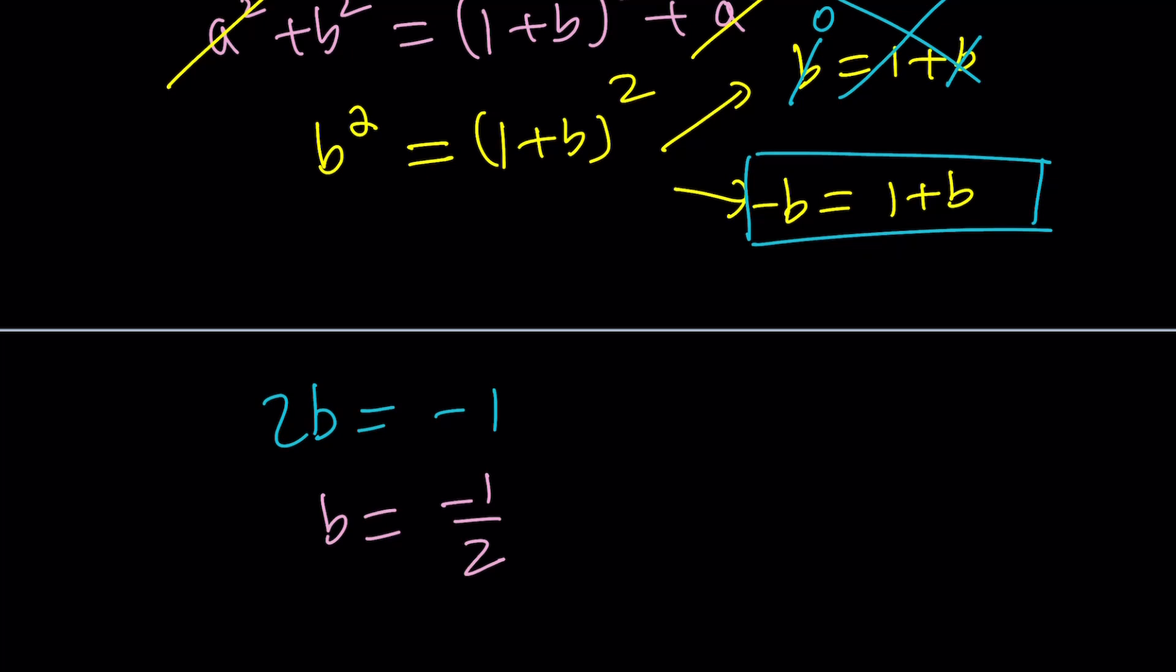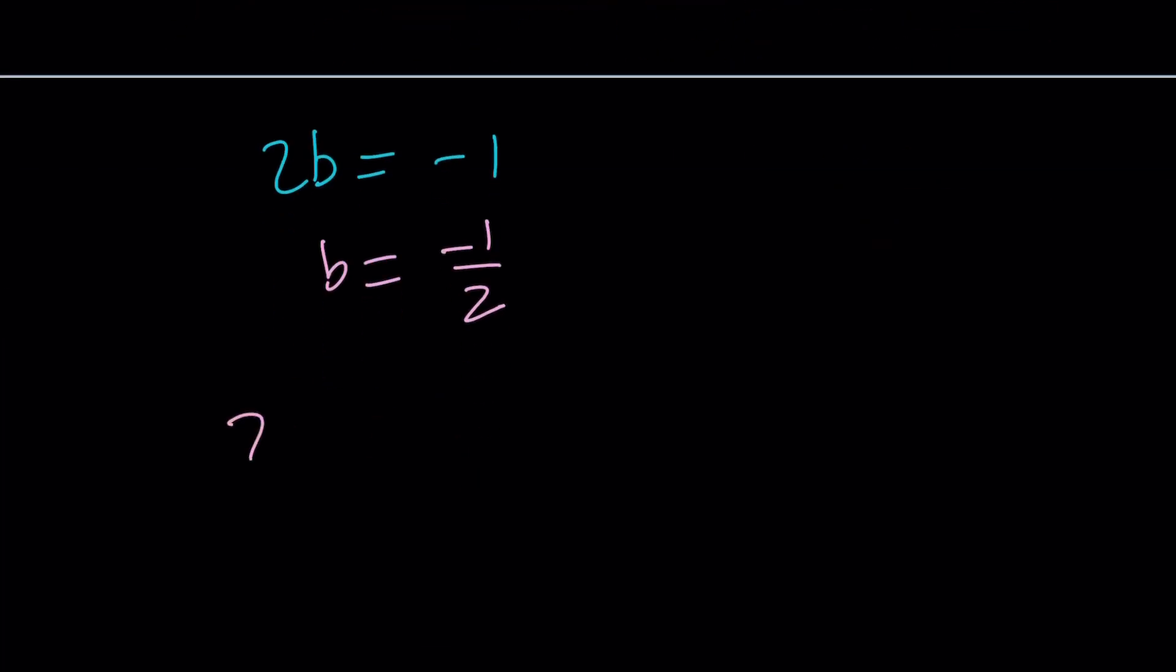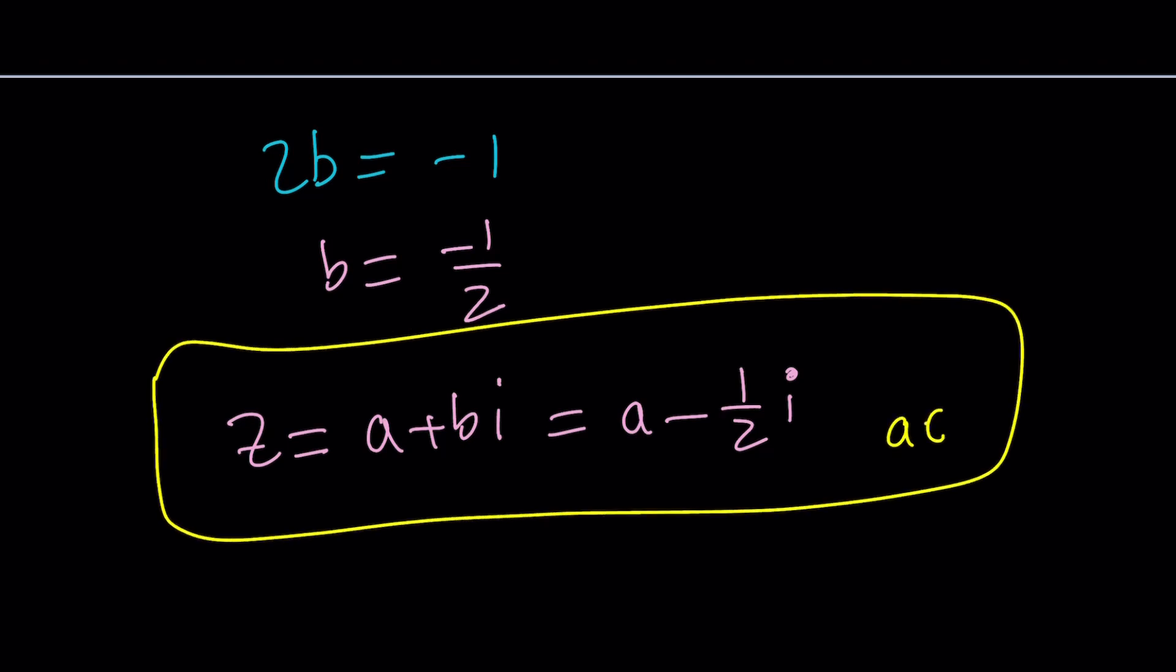But what happened to A? A just disappeared, right? Where did A go? Well, A disappears, which means that you can pretty much pick anything for A. So this means that our solutions are going to be Z equals A plus BI, where A is any real number and B is negative 1 half. So we can pretty much write our numbers as A minus 1 half I. And this would represent all the solutions. Of course, A is a real number. I guess it's needless to say because by definition, A plus BI, A and B are real numbers. Make sense?